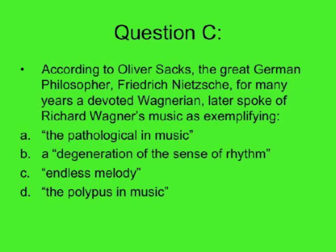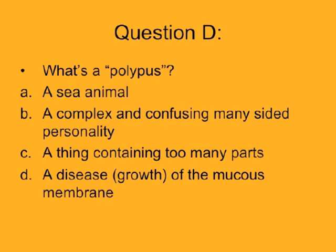This is the one I have a lot of fun with. According to Oliver Sacks, who wrote 'Musicophilia,' the great German philosopher Friedrich Nietzsche — for many years a devoted Wagnerian — split with Wagner and later spoke of Richard Wagner's music as exemplifying the pathological in music: a degeneration of the sense of rhythm, endless melody, or the polypus in music. Which is it? It turns out it's all four — he really was anti-Wagner. So then the next question is: what's a polypus? Is it a sea animal, a complex personality, a thing containing too many parts, or a disease growth of the mucous membrane? In this one, only one answer is correct, and it's D.